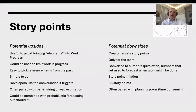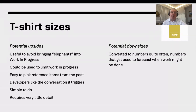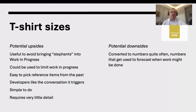T-shirt sizes are much easier than story points and work well combined with wall estimation. They're useful for avoiding elephants and limiting work in progress, requiring very little detail. Despite using T-shirt sizes, though, we always tend to convert them into story points, meaning we end up with all the downsides of story points anyway.